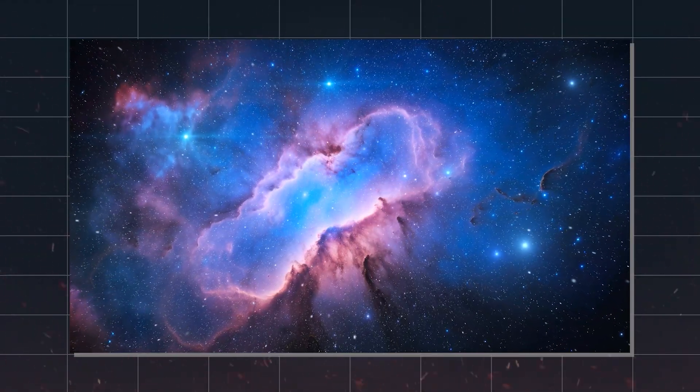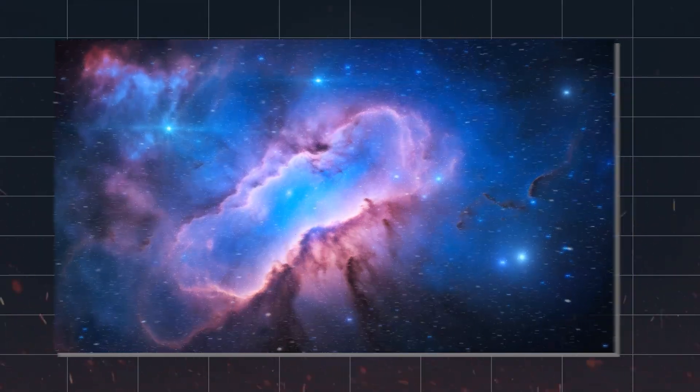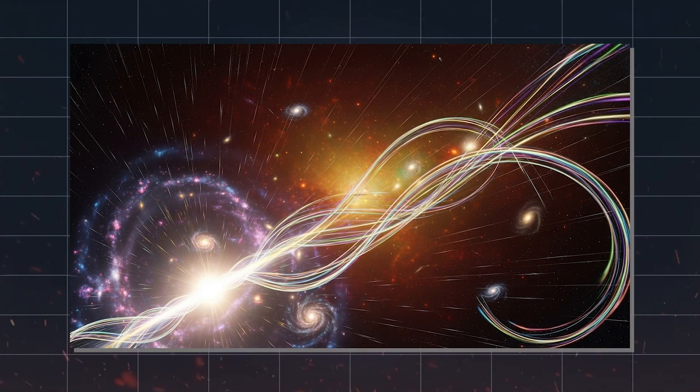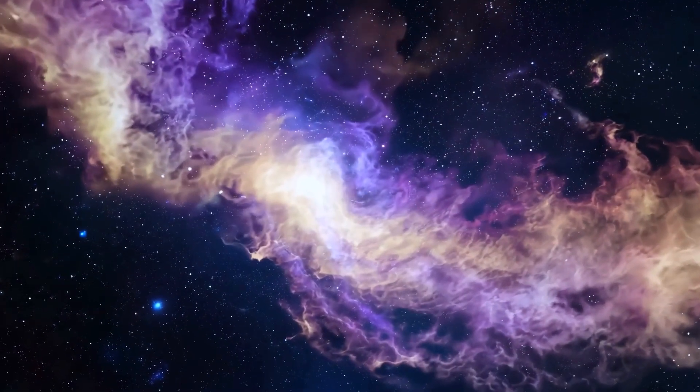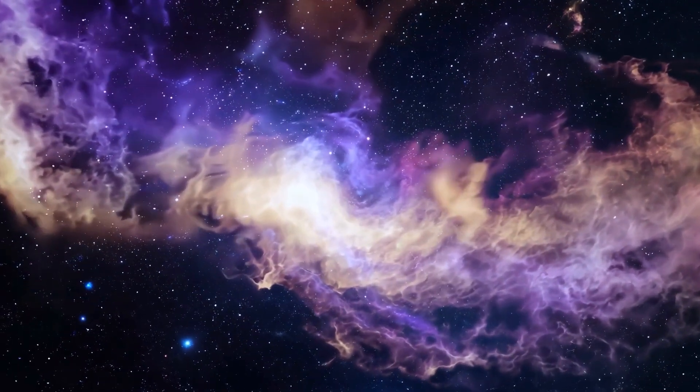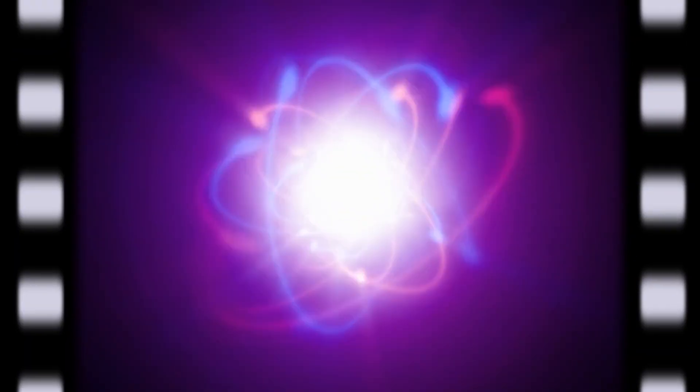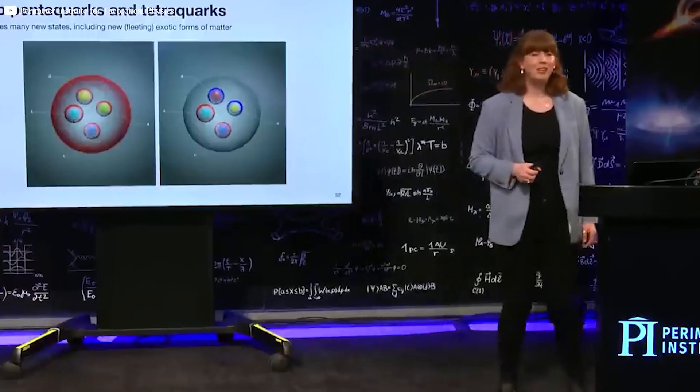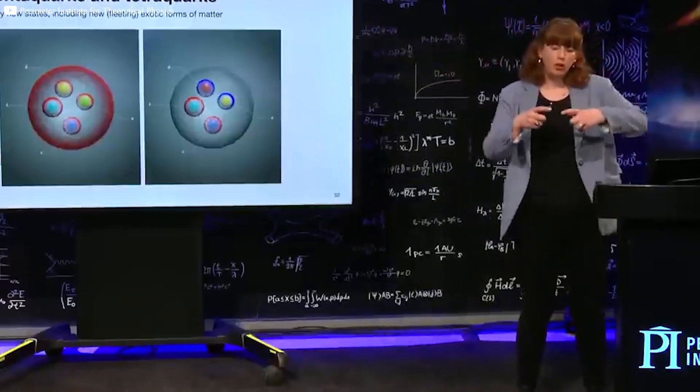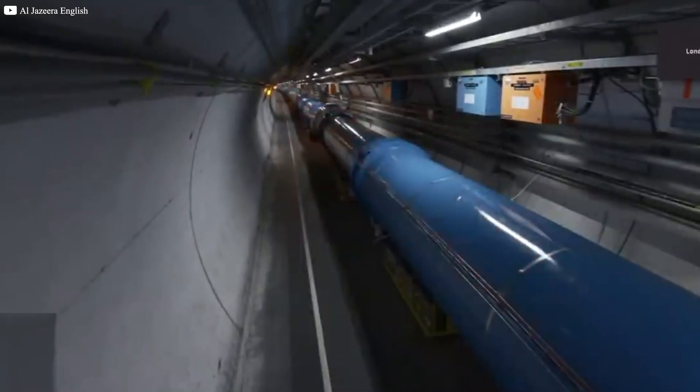It suggested that the energy state of our universe might not be truly stable. Instead, it could be sitting in what scientists call a false vacuum, a shallow valley that is not the lowest point on the slope. If something ever pushed the Higgs field out of this valley, it could slide downward, releasing all of its trapped energy. That slide would tear apart the laws of physics, changing how atoms interact, and leaving no structure behind. CERN believes the chance is vanishingly small. But with billions of collisions every second, the thought lingers. Could one spark trigger the ultimate collapse?